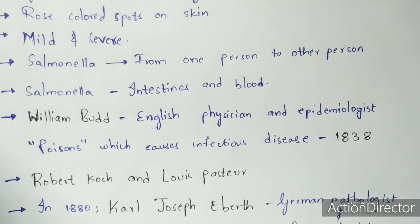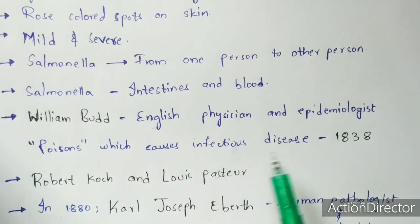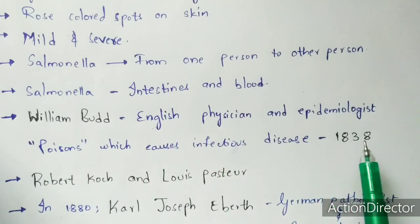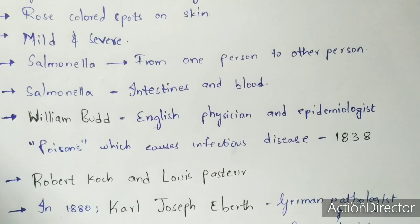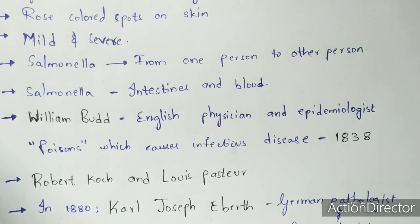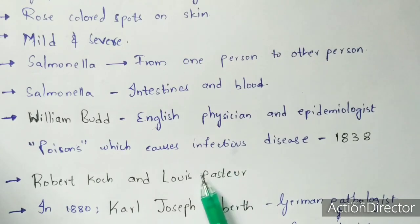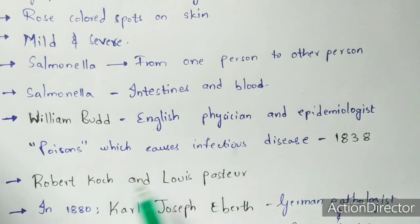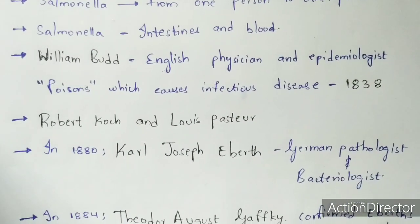Coming to the discovery, William Budd was an English physician and epidemiologist who, in 1838, discovered that there is a poison which causes the infectious disease — he just gave a clue. Next, Robert Koch and Louis Pasteur gave a proper definition of bacteria and discovered the presence of bacteria. Pasteurization is a technique discovered by Pasteur. However, they did not specifically discover the typhoid fever bacterium.